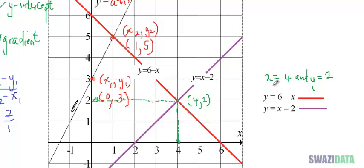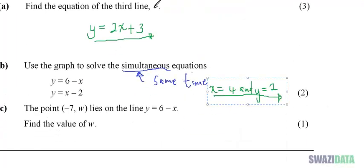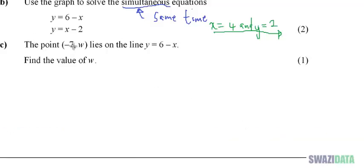Now part c says the point (-7, w) lies on the line y equals 6 minus x. Find the value of w.